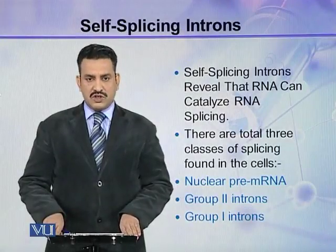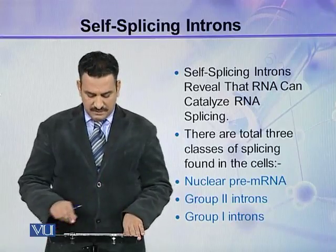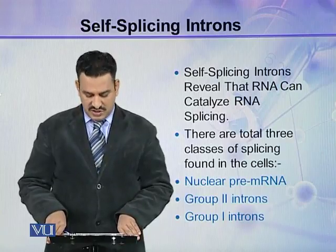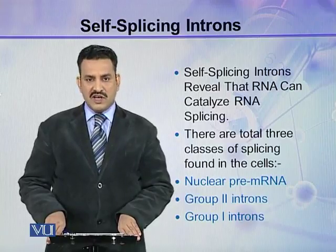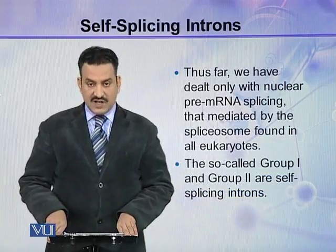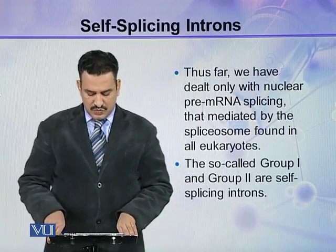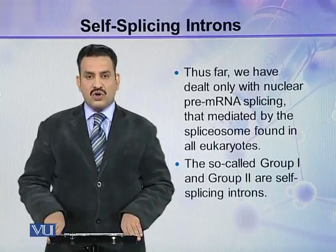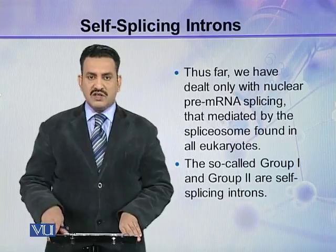Self-splicing introns reveal that RNA can catalyze RNA splicing. There are three total classes of splicing found in cells: nuclear pre-mRNA, group 2 introns, and group 1 introns. Thus far, we have dealt only with nuclear pre-mRNA splicing mediated by the spliceosome found in all eukaryotes. The so-called group 1 and group 2 are self-splicing introns.